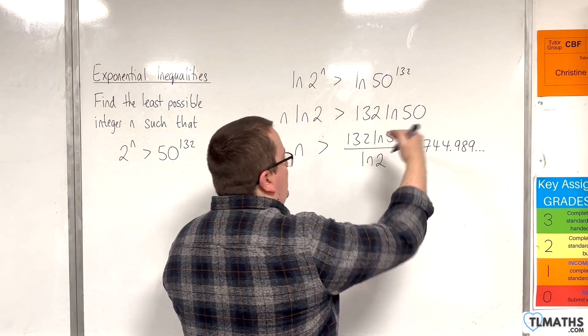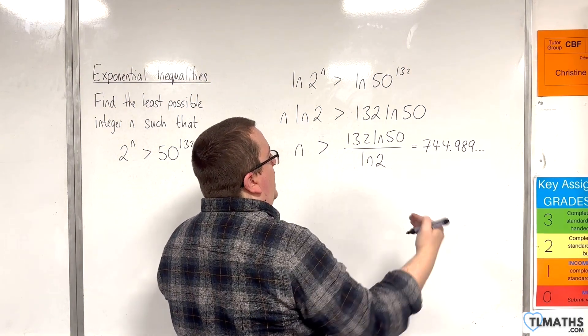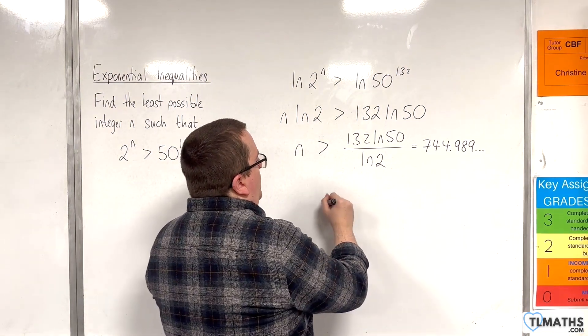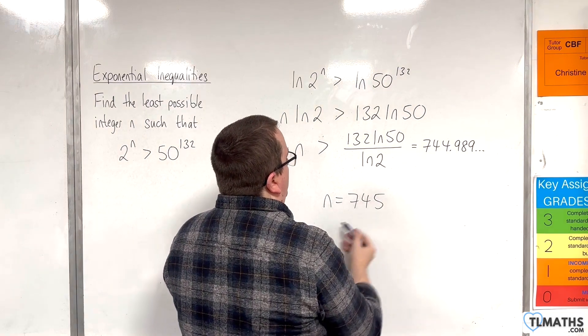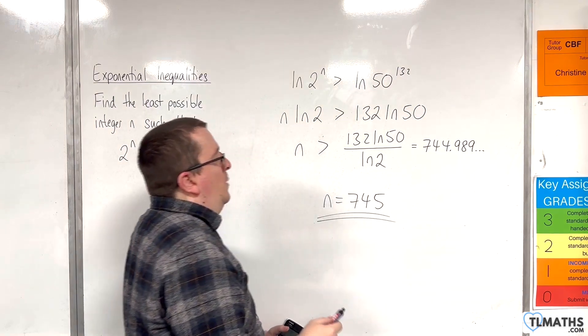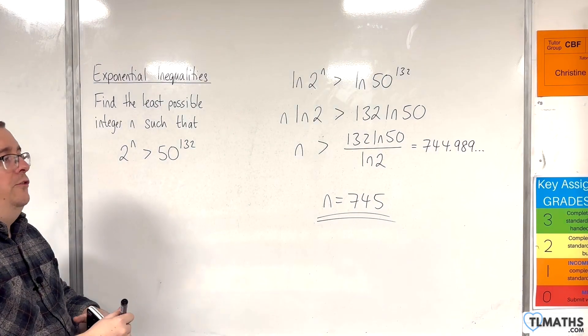So, the next integer would be 745. So, n equals 745 is the least possible integer that will solve the inequality.